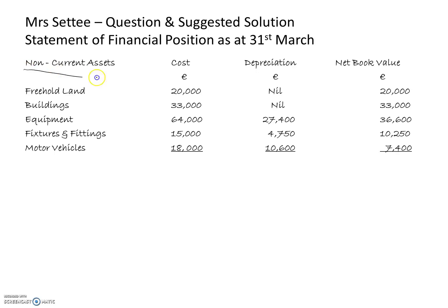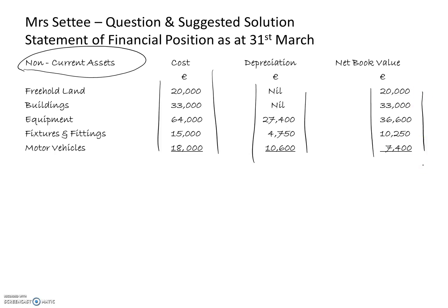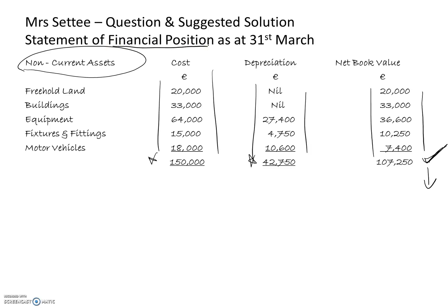At this stage we've completed all the non-current assets, so we just need to finish off the table by adding up the totals for each column. Total cost: 150,000. Total depreciation: 42,750. Net book value: 107,250. The net book value of the non-current assets — 107,250 — is the figure we carry forward. In the statement of financial position we list total assets, starting with this non-current assets net book value.